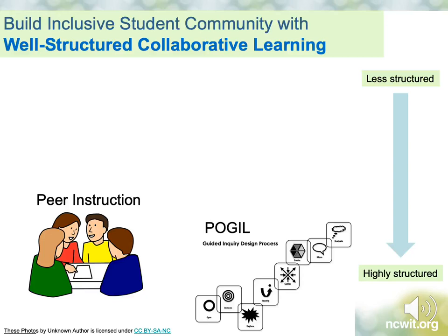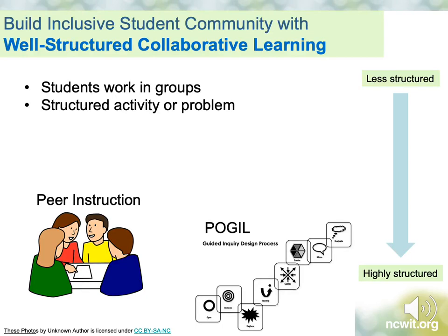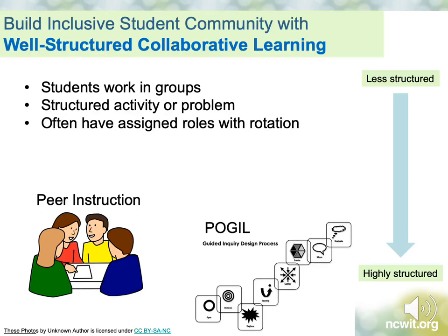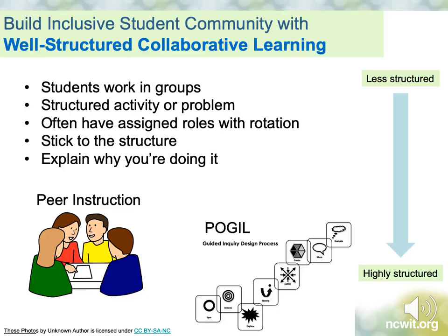The final two techniques are Peer Instruction and Process-Oriented Guided Inquiry Learning, or POGIL. I can't go into depth on either right now since they're fairly complex and content-specific, but they have things in common worth highlighting. Both have students work in groups on very well-structured problems, with specific roles assigned to students who rotate through those roles, as with pair programming. It's important to stick to the structure and make sure students understand why they're doing activities this way. You can find links to more information in the Additional Resources section of this module.